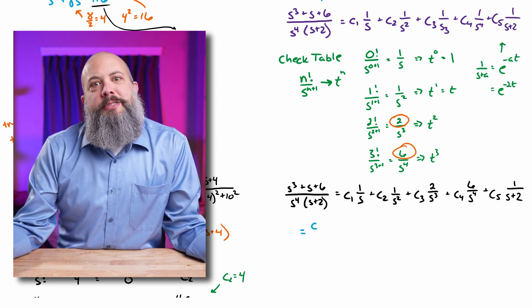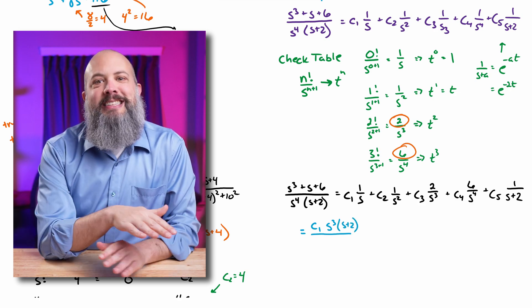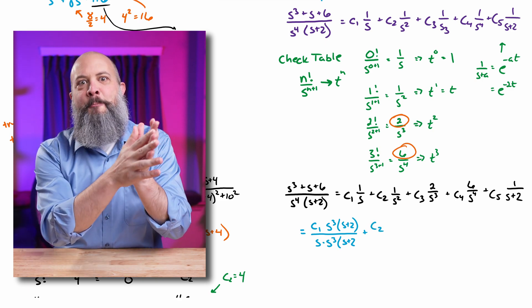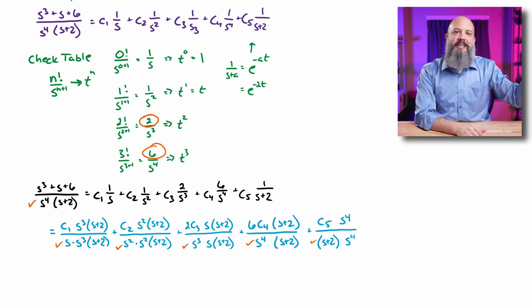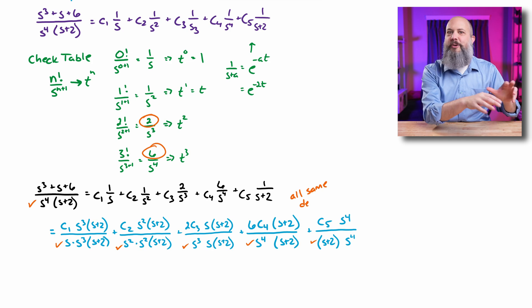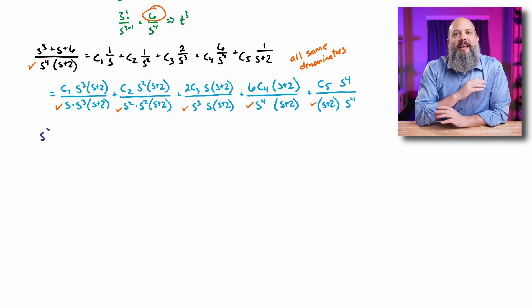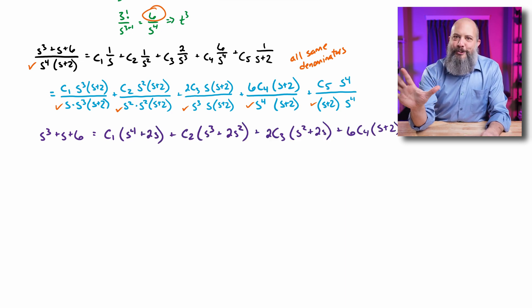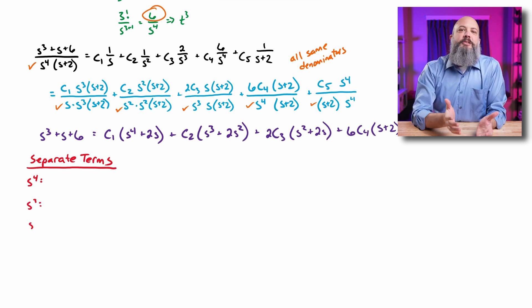Now here comes the tedious part — previous problems had two fractions, but this one has five. I need to rewrite all fractions with the same denominator so I can cancel it out. For the 1/s term, multiply by s³(s+2); for c2, multiply by s²(s+2); and carry on through all the rest — I need to scroll the page to make extra room. Once I cancel out all denominators, I'm left with one numerator equation with five unknowns.